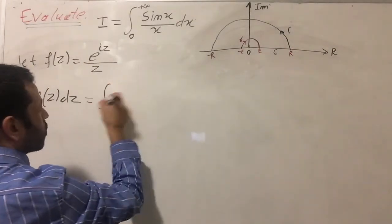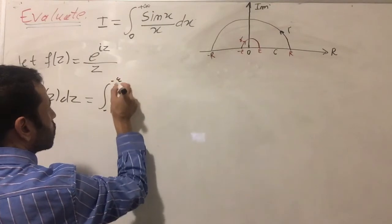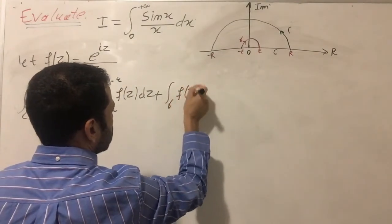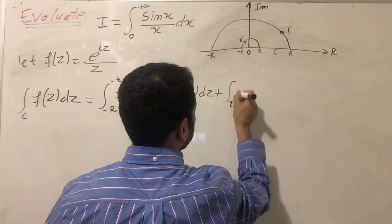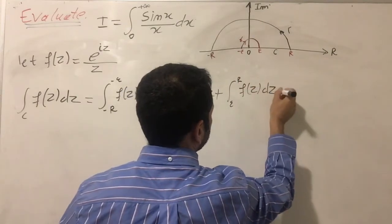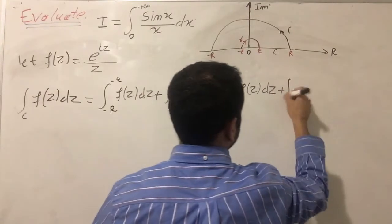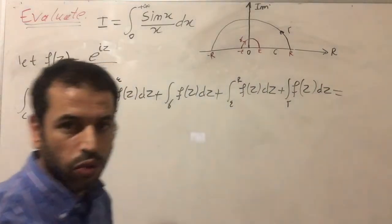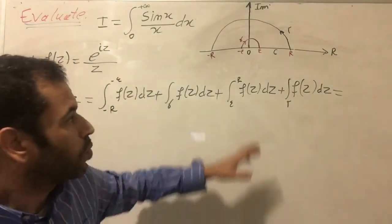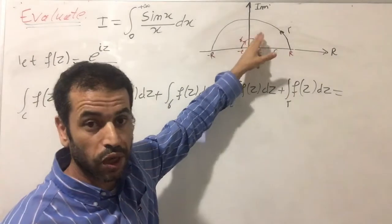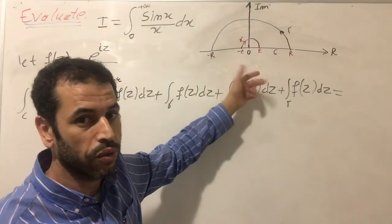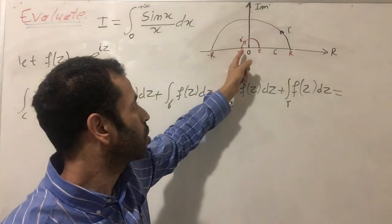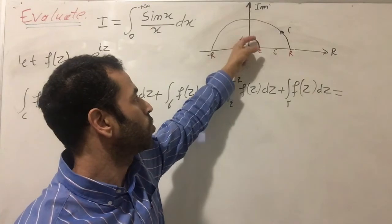I'm going to write the sum of the integral over this contour c: the integral of f(z) dz over contour c equals the integral from minus r to minus epsilon of f(z) dz, plus the integral over the small gamma of f(z) dz, plus the integral from epsilon to r of f(z) dz, plus the integral over the large gamma of f(z) dz, which equals 0. We apply the Cauchy theorem: the sum of integrals over the contour equals 0 if there are no poles inside. Because the pole at 0 was jumped over with the small detour, there are no poles enclosed.